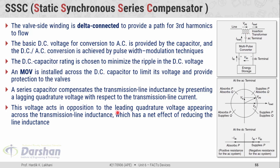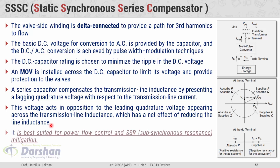This voltage acts in opposition to the leading quadrature voltage appearing across the transmission line inductance, which has the net effect of reducing the line inductance. A series capacitor compensates the transmission line inductance by presenting a lagging quadrature voltage with respect to the transmission line current. Primarily, the Static Synchronous Series Compensator is used for two purposes: to control the power flow, and for mitigation of sub-synchronous resonance.